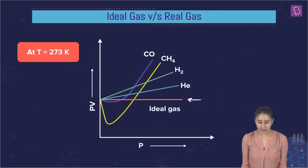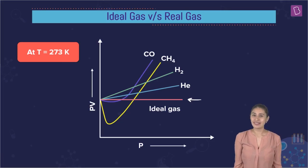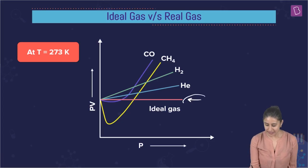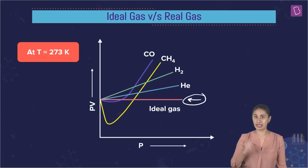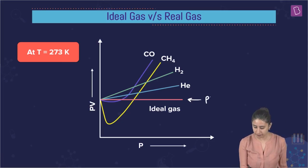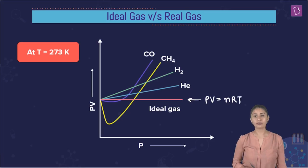If the gas is an ideal gas. But look at the PV versus P curve at a particular temperature, which is 273 Kelvin or 0 degree Celsius. Check out for the real gases. Something astonishing is there. The curves that we are getting are not straight lines, are not horizontal lines, are not lines which are parallel to the x-axis. This is not the case.